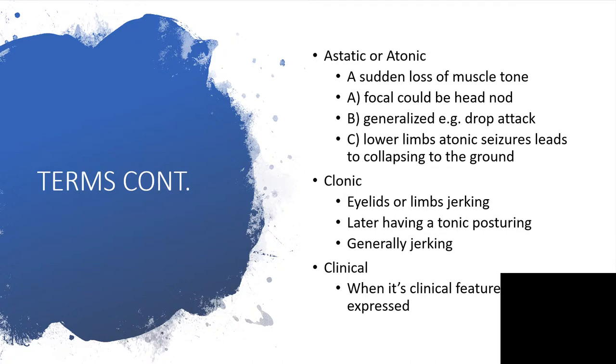Seizures on terms could be atonic or tonic. When it is atonic, there will be sudden loss of muscle tone, and that could be in form of head nodding. Or if it is affecting the entire muscles, if it is generalized atonic condition, the individual will just drop. I mean the individual will just fall suddenly. That is called drop attack. Still on that, the lower limbs atonic seizures will lead to collapsing to the ground when the two limbs suddenly become atonic. That means loss of muscle tone.